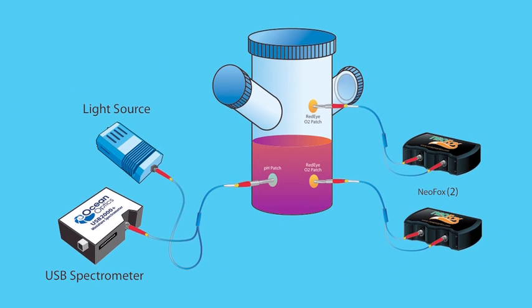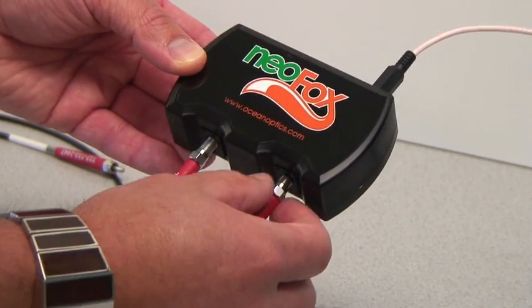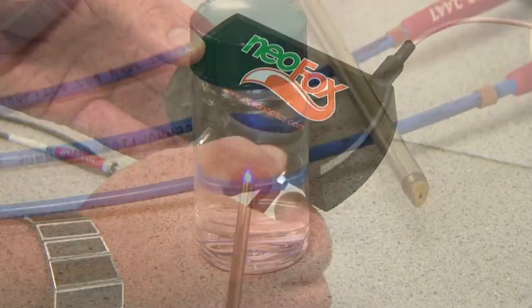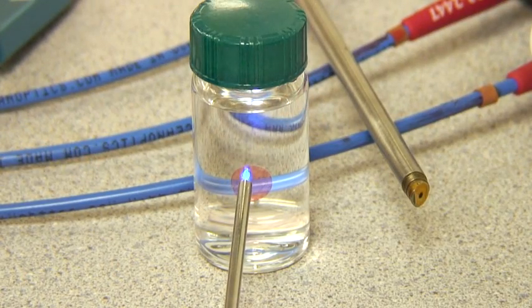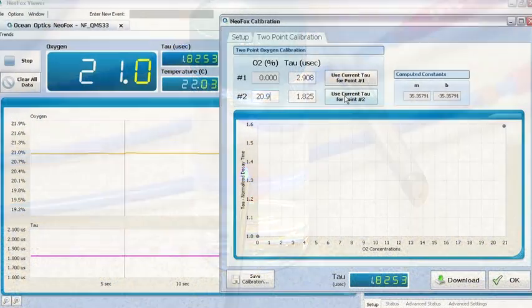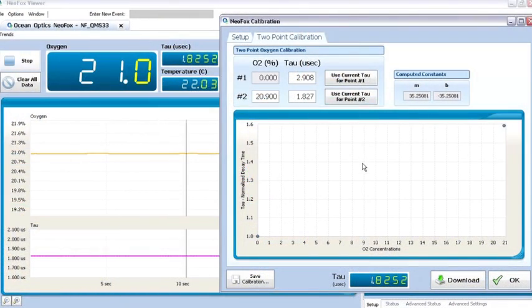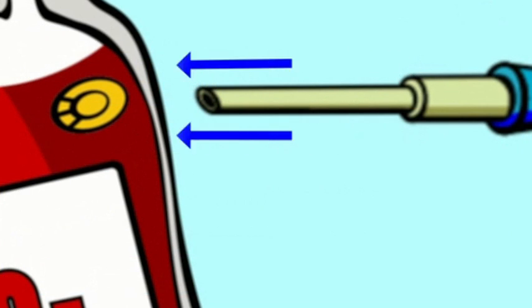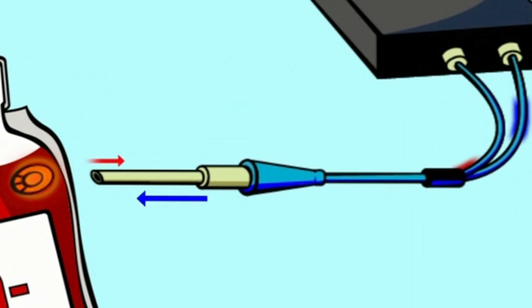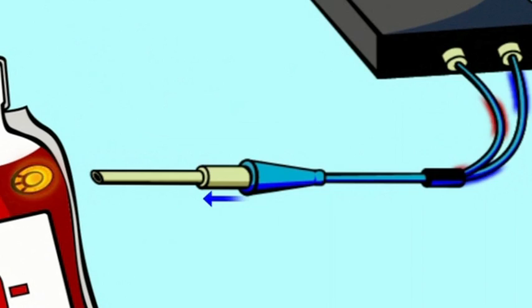Now that you're familiar with the setup, let's discuss the technology. Ocean Optics optical oxygen sensors use phase measurement to determine oxygen content. We use fluorescence to measure the partial pressure of dissolved oxygen. When oxygen in the gas or liquid sample diffuses into the thin film coating of the red eye patch, it quenches the fluorescence. The degree of quenching correlates to the level of oxygen pressure.